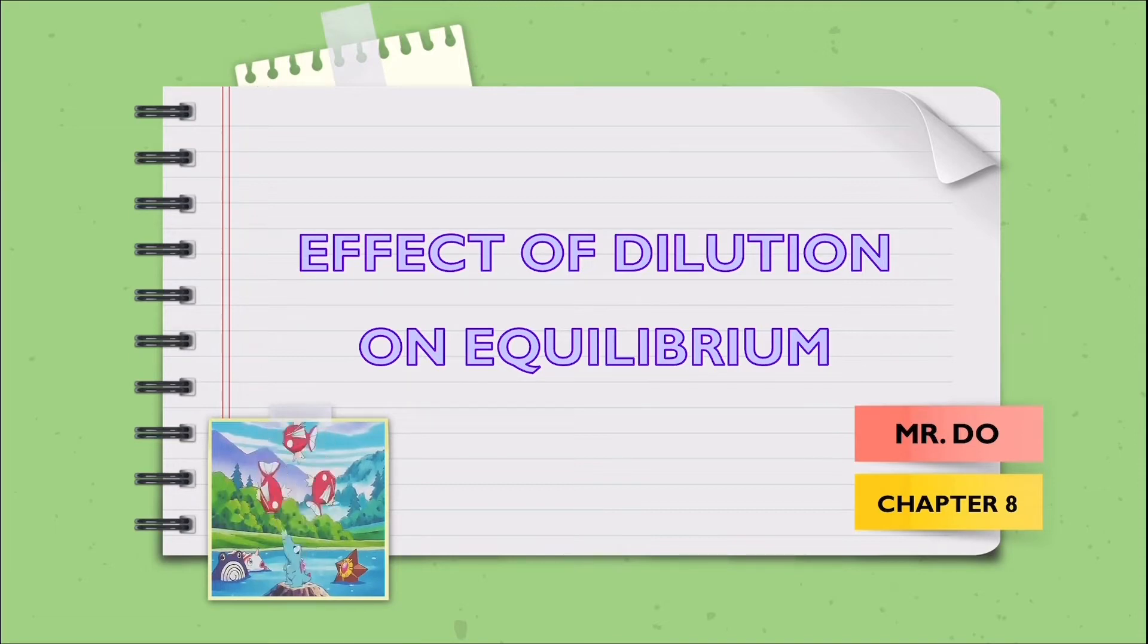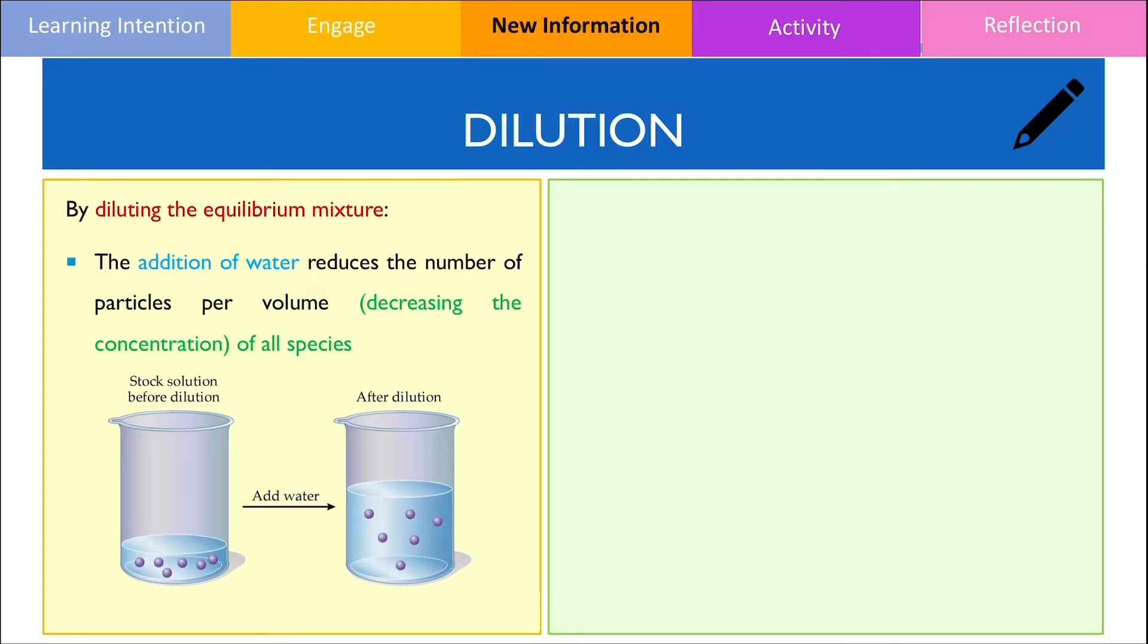If we are diluting the equilibrium mixture, we are increasing the volume by adding water, thereby decreasing the concentration of all ions since the particles are now more spread out as shown in the image below.